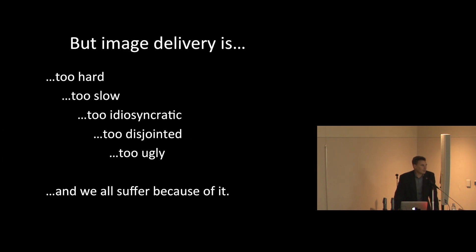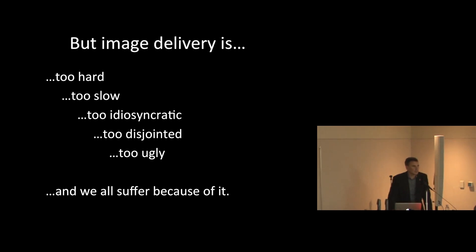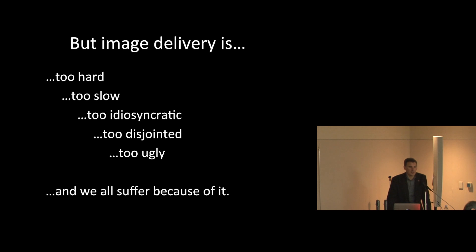Image delivery on the internet is a challenge — it's technologically difficult and expensive. Image delivery on the web is often slow, idiosyncratic from site to site, and disjointed if you're working with images from multiple different sites. The experience varies greatly and is often an unpleasant experience for researchers and end users. Institutions have to make it up individually, software providers write code for many different sites, and users are forced to cope with unevenness.